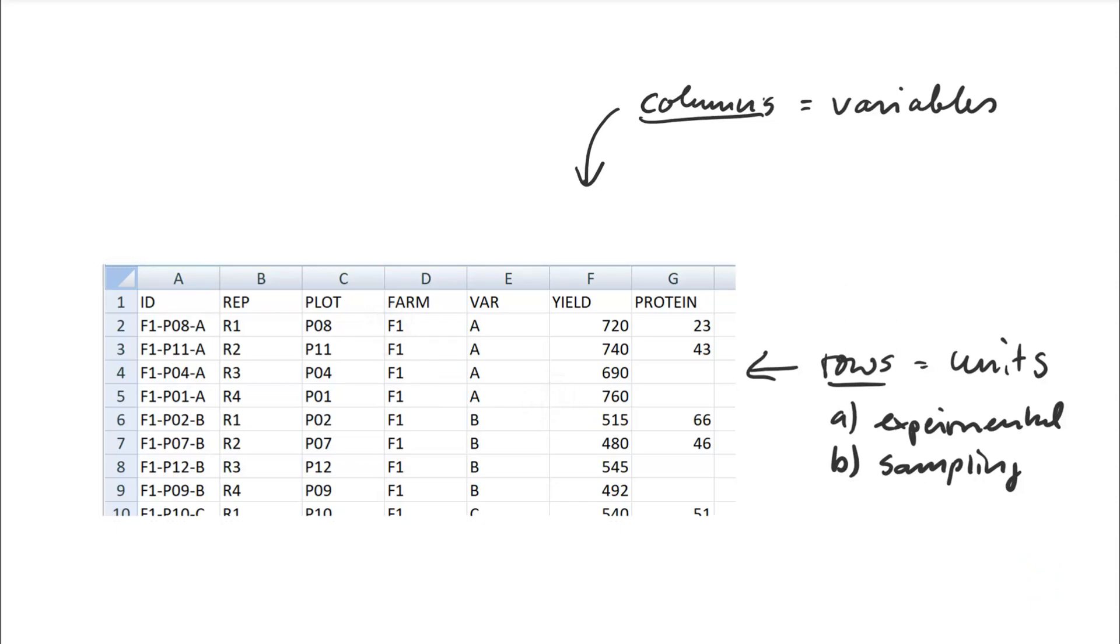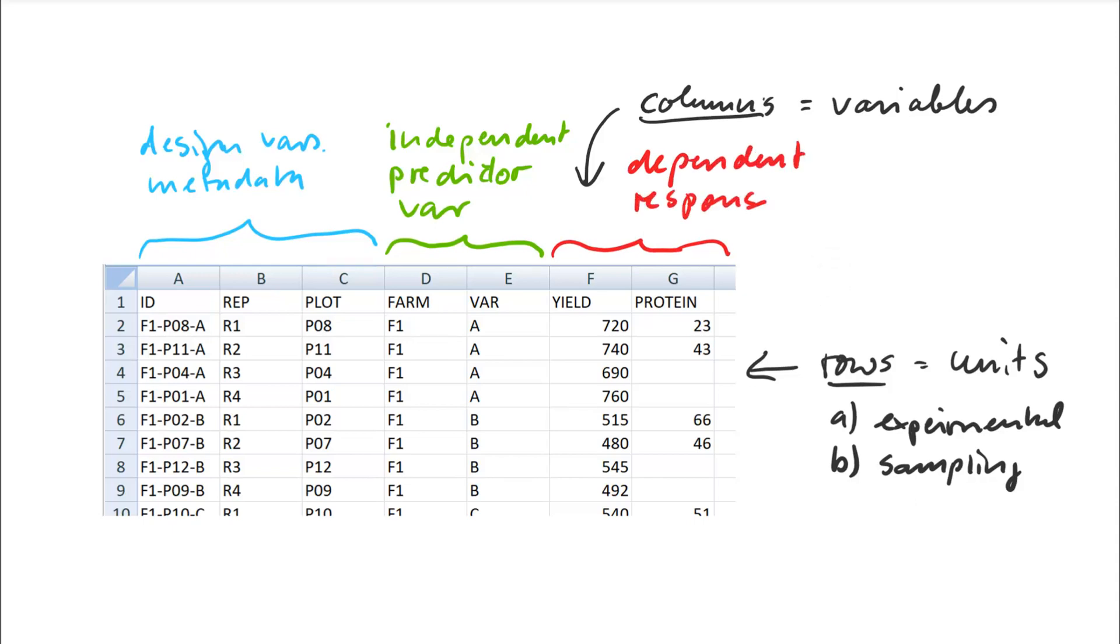So there are typically three types of variables. Your first block of variables, those tend to be design variables or metadata. Your second block are the independent variables, or they're also called predictor variables. And your last block are the dependent variables, or also called response variables. So those are synonyms, they mean the same thing, dependent variable, response variable, independent variable is the same as predictor variable.